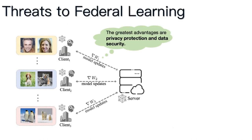Federated Learning, a cutting-edge machine learning methodology, is celebrated for its distinctive ability to preserve data privacy within distributed frameworks. It primarily operates by collecting model updates from clients through a central server, while abstaining from accessing raw data directly. This dual benefit of enabling concurrent model training and safeguarding user privacy has accelerated its adoption, especially in light of escalating privacy issues.